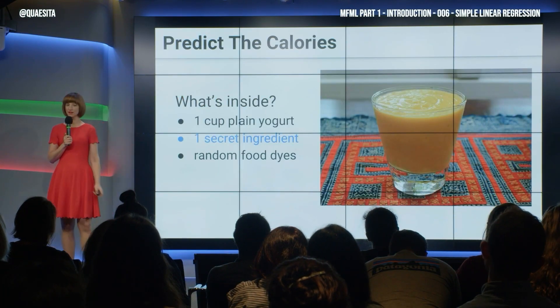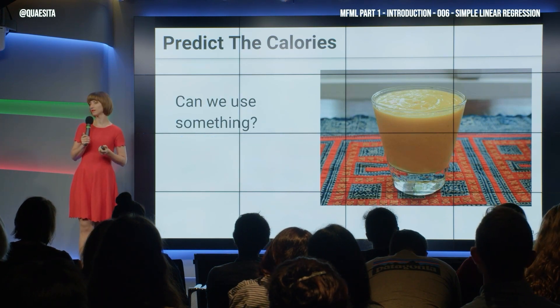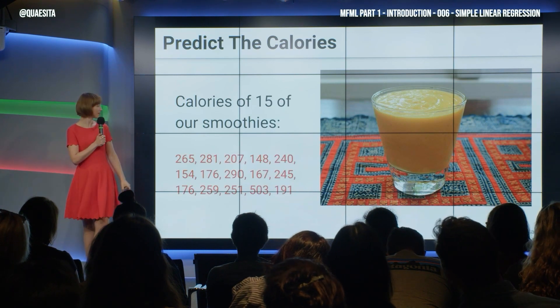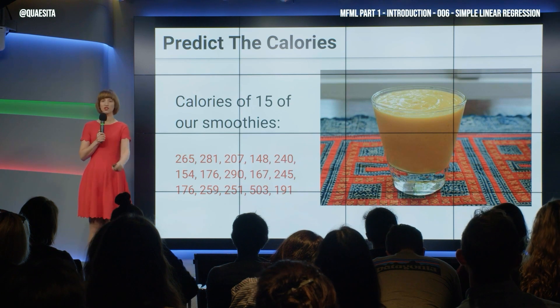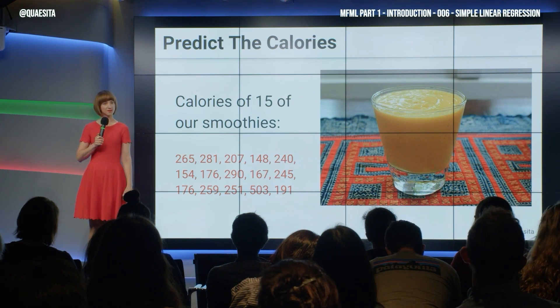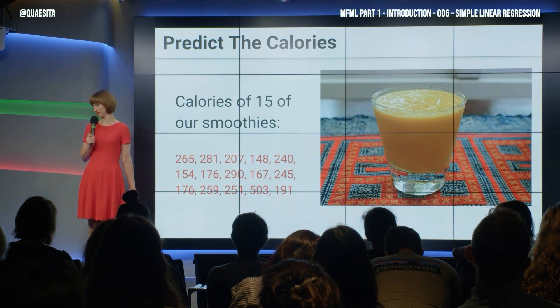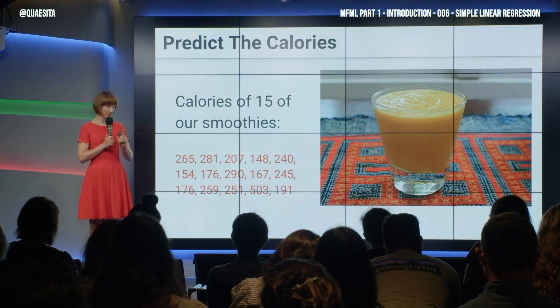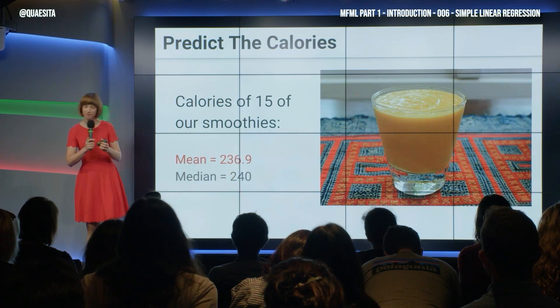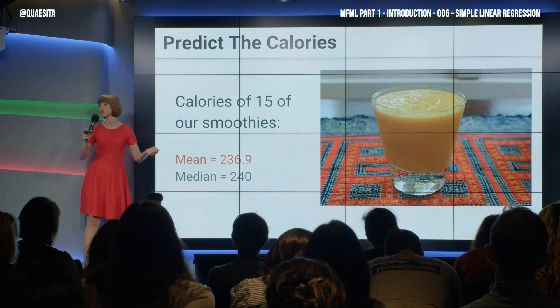But before I make you guess, I'm going to give you a little more information. This is the 16th smoothie that I've made. And here are the 15 previous calorie amounts. Your first reaction to this should be, not trying to read it, but instead stamping your foot and saying, I'm a human. I don't add numbers up. That's what machines are for. Indeed. Correct. So, the machine is going to help us out and summarize them. And we find out that the average is 237 and the middle thing is 240.